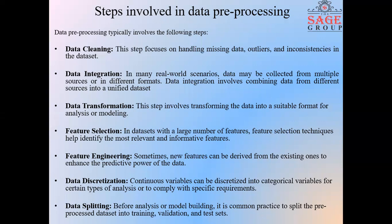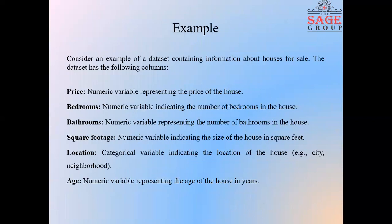Let us have an example to understand how the data pre-processing has been done on the dataset. This is an example of a dataset which contains the information about houses for sale. The dataset has the following columns. The first column is the price. It's a numerical value representing the price of the house. Next column contains number of bedrooms, also a numerical value indicating the number of bedrooms in the house. The third column is the bathroom, also a numerical value representing the number of bathrooms in the house. Next column is the square footage, also a numerical value indicating the size of the house in square feet.